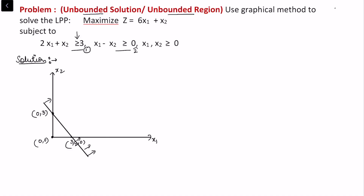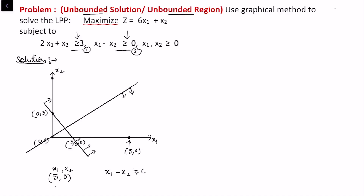Now draw the second constraint: x1 minus x2 greater than or equal to 0. This is a straight line passing through the origin. The region is on the lower side. To identify which side, take a test point such as (5, 0): substituting into x1 minus x2 gives 5 minus 0, which is greater than or equal to 0 — true. So this side is the relevant region for the second constraint. The intersection of the two lines is (1, 1), and the other corner point is (3/2, 0). With non-negative restrictions, x1 and x2 are both greater than or equal to 0.